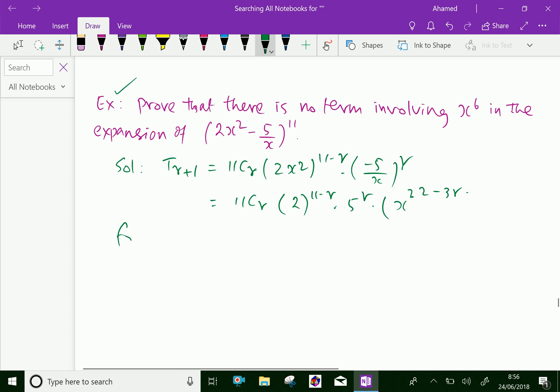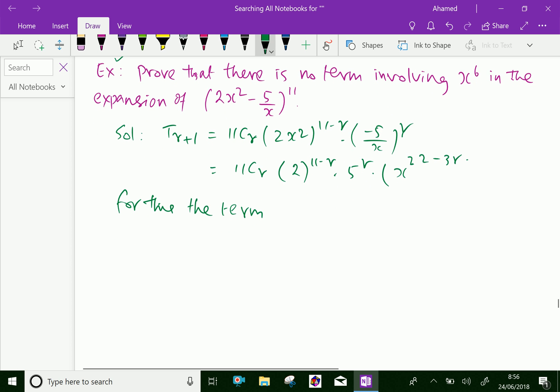Now, for this term to contain x^6, we must equate the index: 22 - 3r equals 6. Therefore, this gives r equal to 16/3, which is not a natural number.